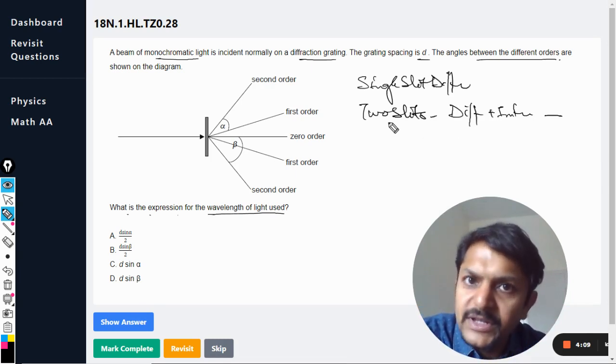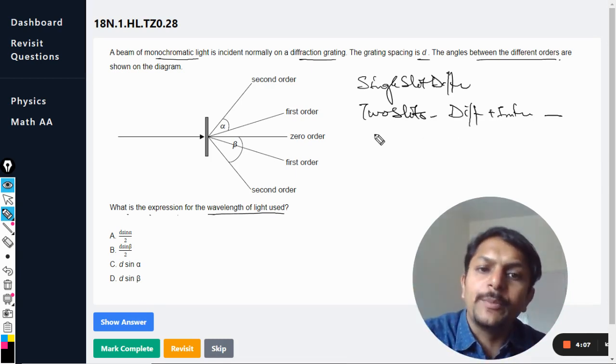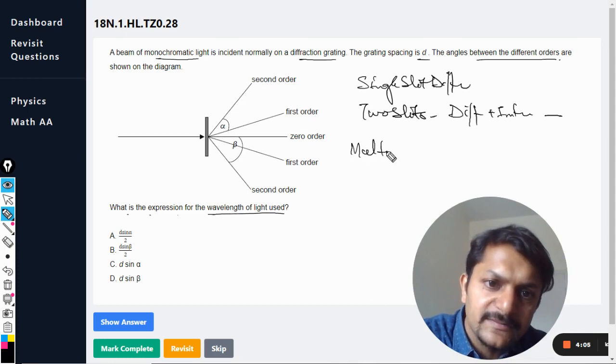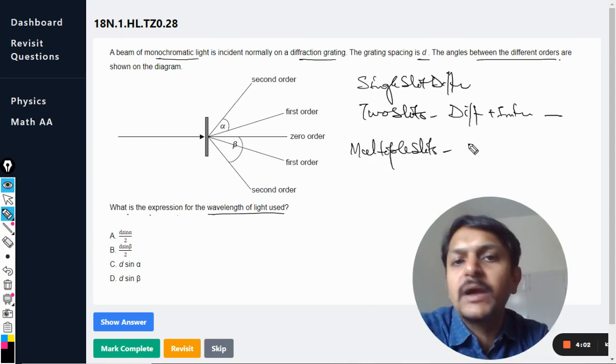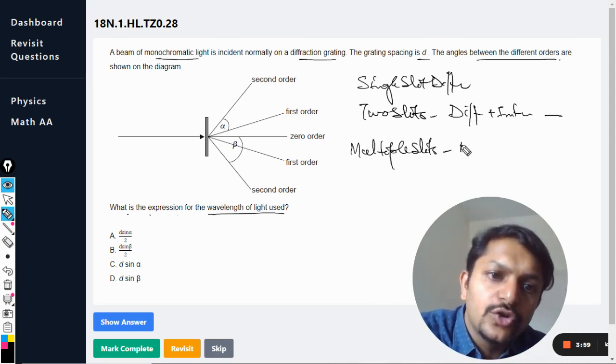Then there is the third topic, which is multiple slits, like you're having four slits or eight slits. You might have seen those kinds of questions. In those cases also, all the formulas for diffraction plus interference are there.